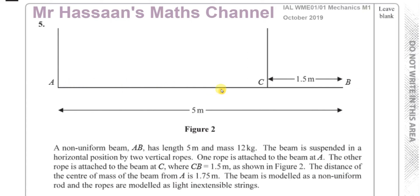So the center of mass is somewhere between A and C, at 1.75 meters from A — exactly halfway between A and C, since A to C is 3.5 meters. The beam is modeled as a non-uniform rod, and the ropes are modeled as light inextensible strings, so we don't consider the weight of the ropes. The tension in rope A is the same throughout it, and similarly for rope C, but the two tensions are generally different.